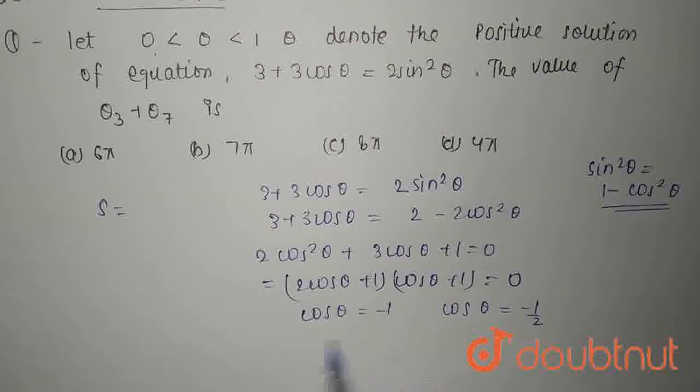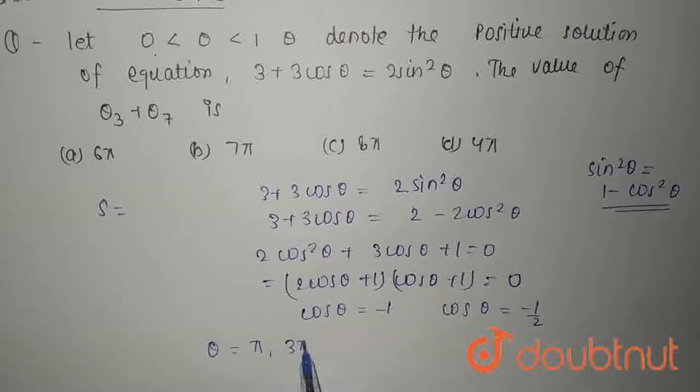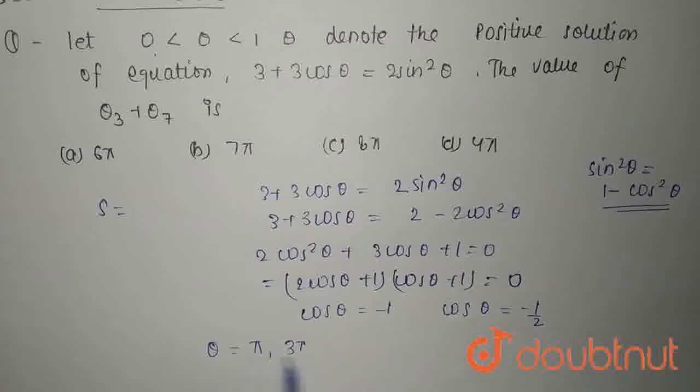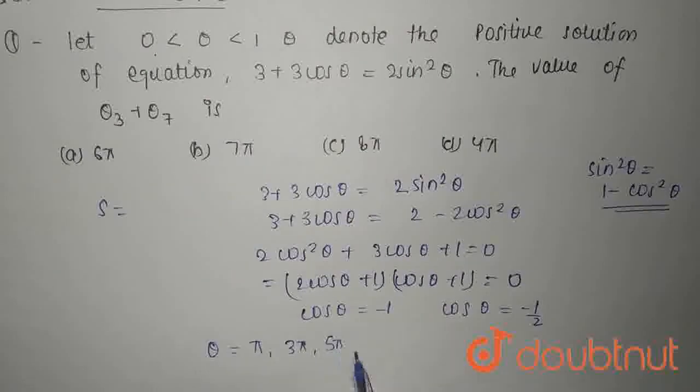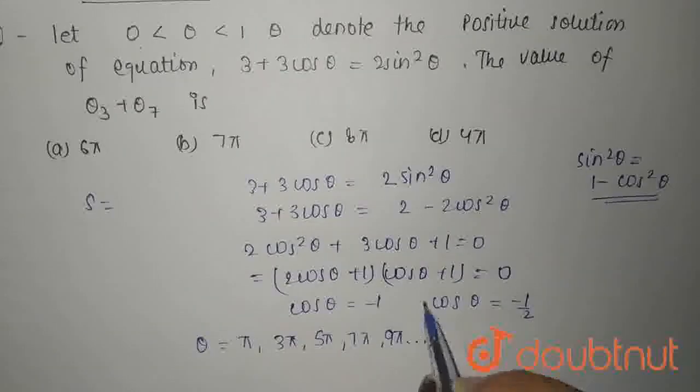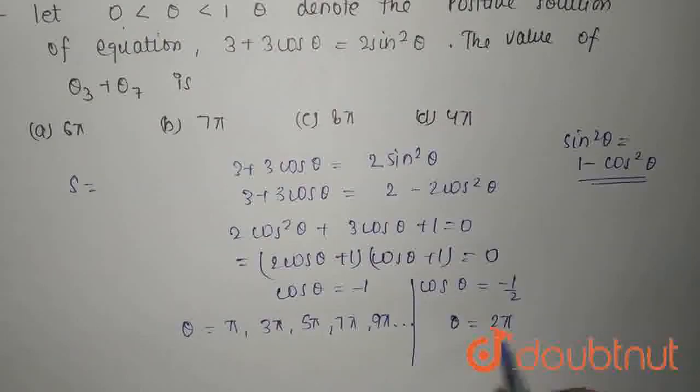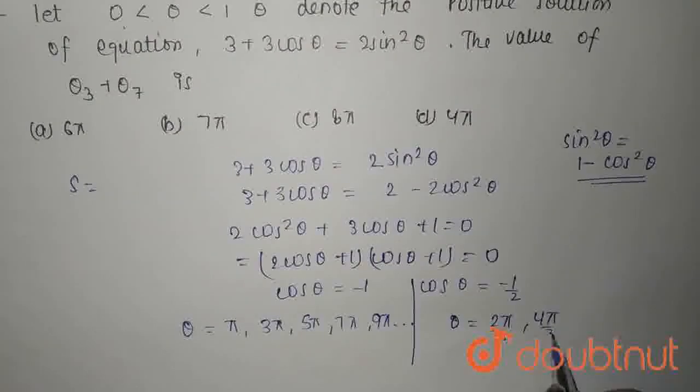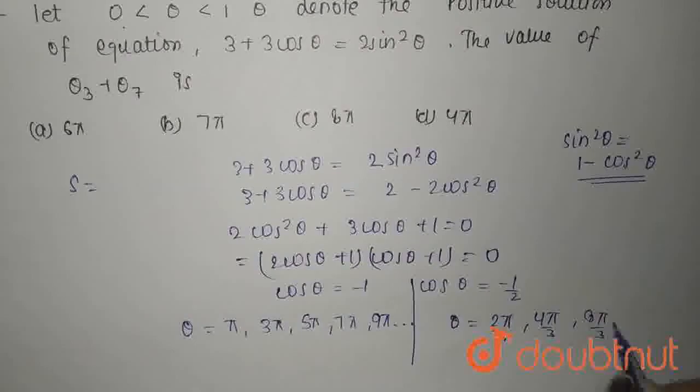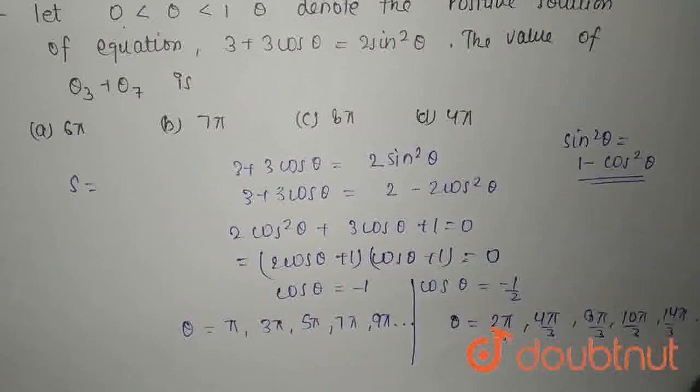When cos theta equals minus 1, then theta equals pi, any odd value with pi: pi, 3 pi, 5 pi, 7 pi, 9 pi and so on. When cos theta equals minus 1 by 2, then theta equals 2 pi by 3, 4 pi by 3, 8 pi by 3, 10 pi by 3, 14 pi by 3 and so on.